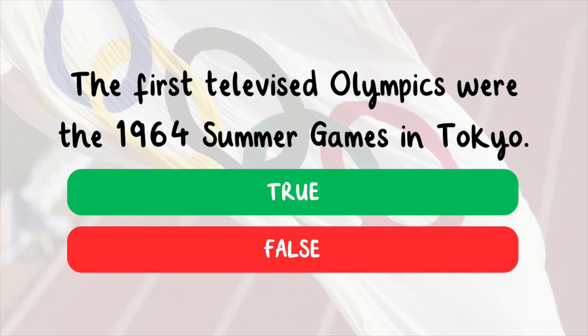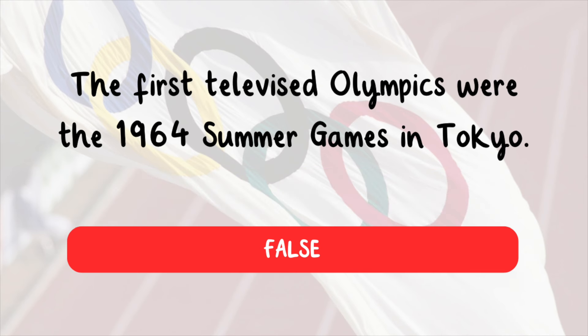True or false? The first televised Olympics were the 1964 Summer Games in Tokyo. This is false. The 1964 Summer Games were the first to reach a worldwide audience on TV, but the 1936 Games in Berlin were the first to be broadcast live on television.